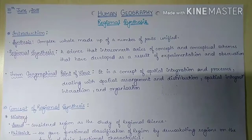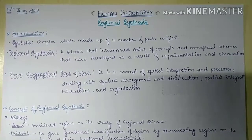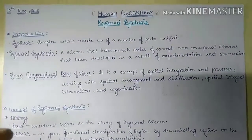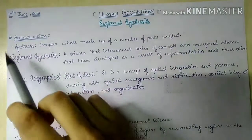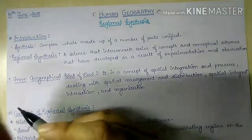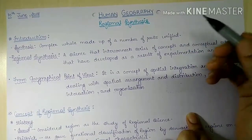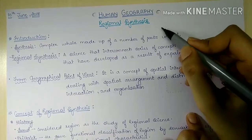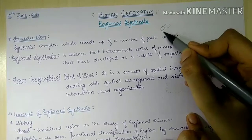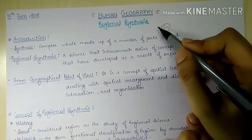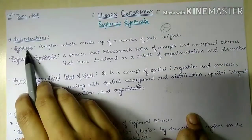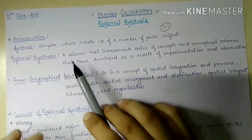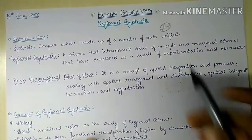Regional synthesis, as the name suggests, deals with spatial integration, spatial synthesis, or spatial interconnection. To understand it, we first need to find the meaning of synthesis. Synthesis simply means to make a complex whole from a number of units. When a number of parts are unified, we make a complex whole, and this process of formation is known as synthesis.